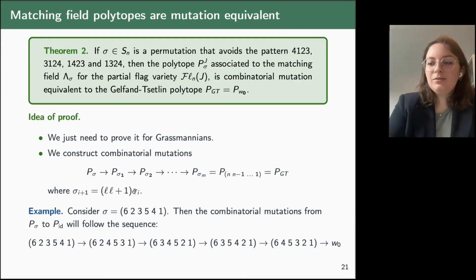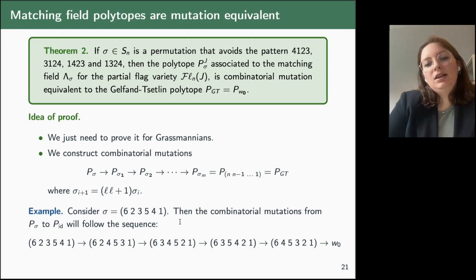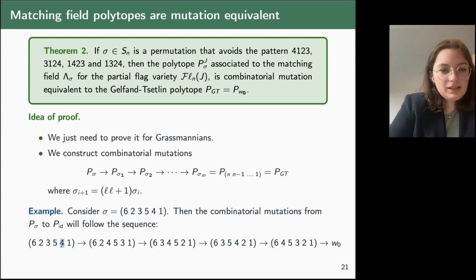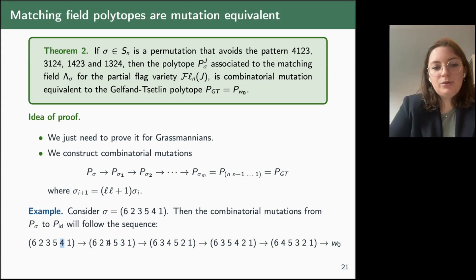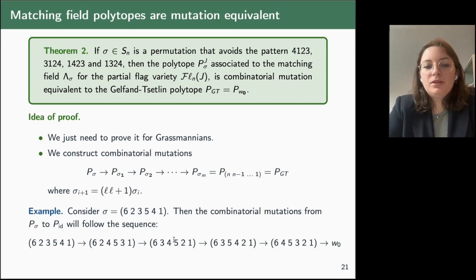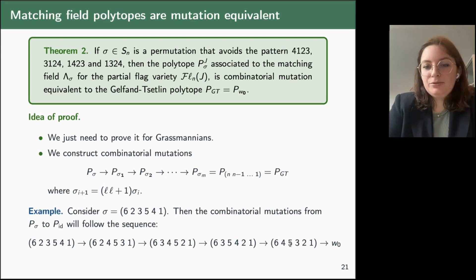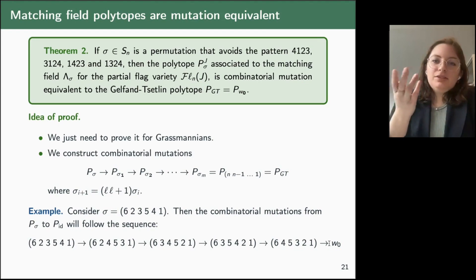For example, consider σ = (6,2,3,5,4,1). We construct combinatorial mutations from P_σ to the Gelfand-Zetlin polytope by starting from the rightmost element not in the right place — here that is 4 — and swapping it with 3, then swapping 3 with 2. We then put 3 in place of 5, 4 in place of 5, and finally swap 5 and 4, arriving at the permutation (6,5,4,3,2,1).